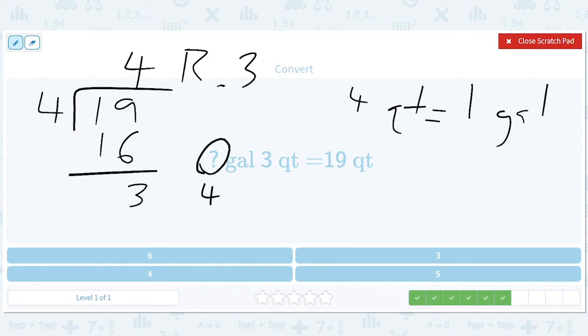So there are four full gallons in 19 quarts, and then there are three extra quarts left over. So four, four gallons.